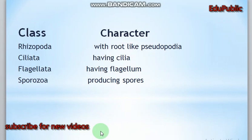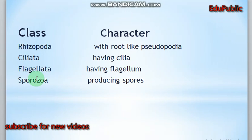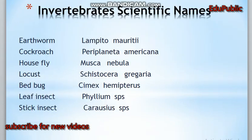Characteristics of some classes: class Rhizopoda includes animals with root-like pseudopodia; class Ciliata includes ciliated animals; class Flagellata includes animals with a flagellum; and the Sporozoa class includes animals that produce spores.